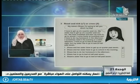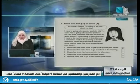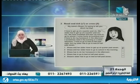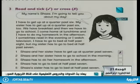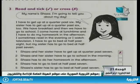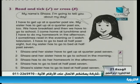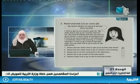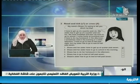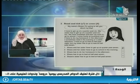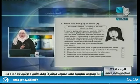Now read and tick — true or false. We will read this paragraph about Shaza, then write true or false. My name is Shaza. I'm going to tell you about my day. I have to get up at quarter past six. My sister has to get up at quarter past six too — the same time. We have breakfast and then we have to go to school. I come home at lunchtime and I have to do my homework in the afternoon. I sometimes read in the evening or watch television. I have to go to bed at half past eight, but my sister has to go to bed at half past seven.